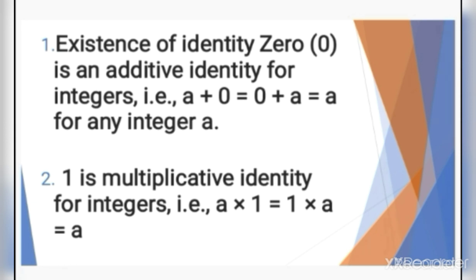1 is the multiplicative identity for integers. That means if we multiply any integer with 1, we will get that integer as the answer. For example, 20 into 1 gives 20, 2000 into 1 gives 2000, and minus 4 into 1 gives minus 4.